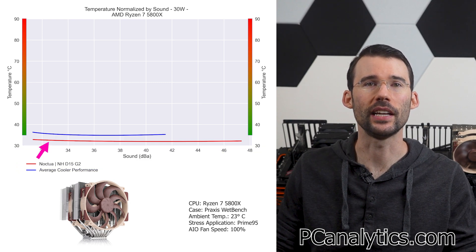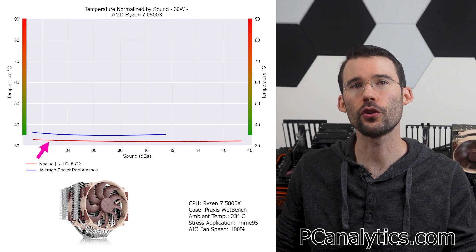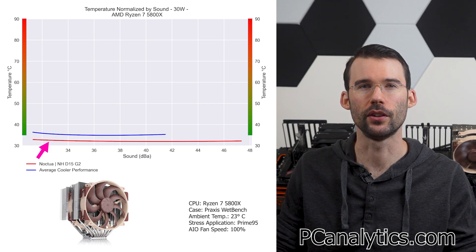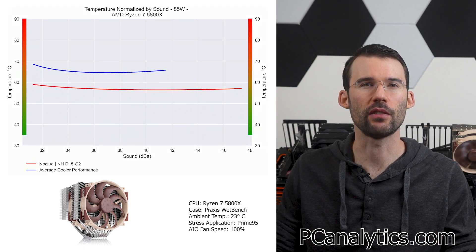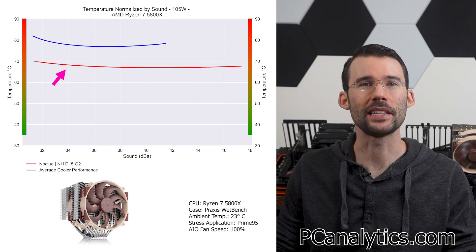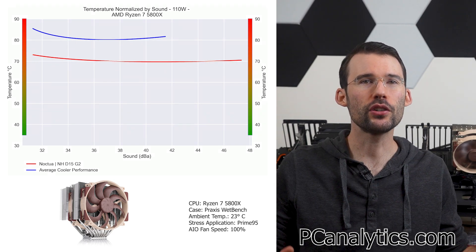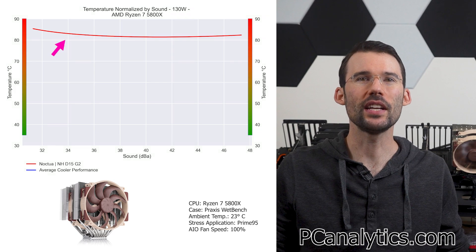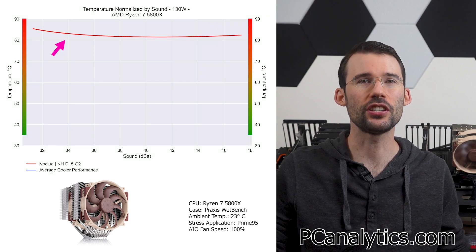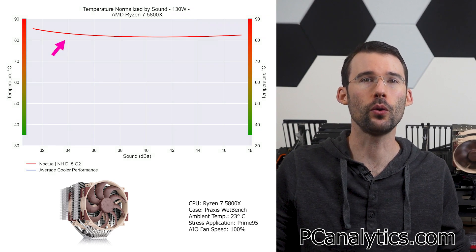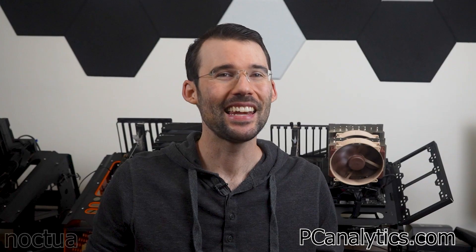At idle, we can see that the Noctua NH-D15G2 provides noticeably better cooling for a given noise level. And when we push the CPU to 105 watts, we can see that this cooler begins to materially outperform relative to the average cooler. And when we push the CPU to 130 watts, we can see that this trend continues as the NH-D15G2 provides great cooling at all noise levels.